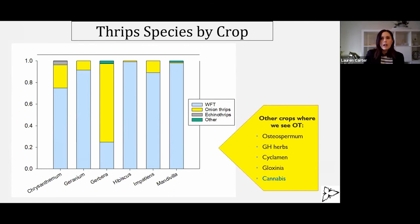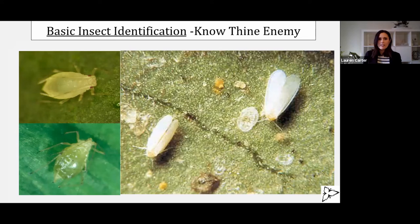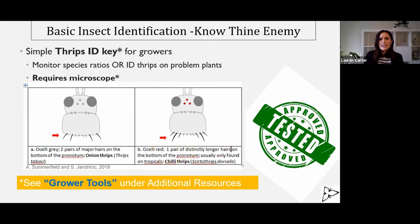It comes back to basic insect identification — we do this for aphids and whiteflies and mites; why aren't we doing it for thrips? So we tried to solve this problem by creating an easy identification key for growers, because insect identification can be very difficult. We wanted to make something that IPM practitioners, consultants, and even on-farm IPM people could use.